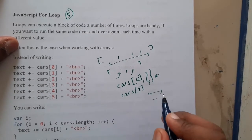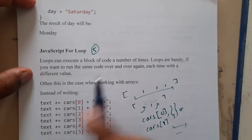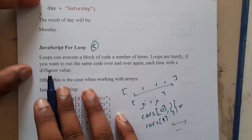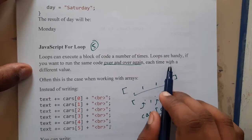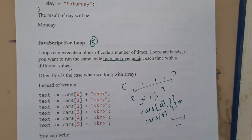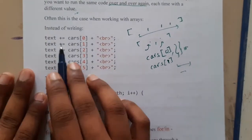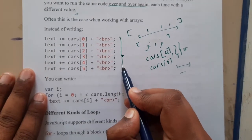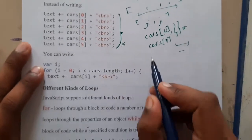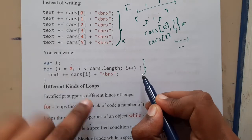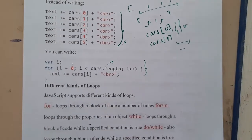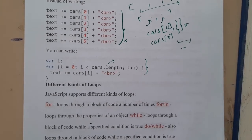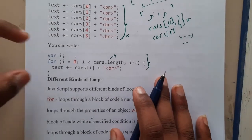This is the reason why loops came into play. To do a single task repeatedly again and again, we use loops. Loops can execute a block of code a number of times — they are handy if you want to run the same code over and over again, each time with a different value. You can also update values and make small modifications. Instead of many lines, just three lines can handle whatever length the array might be.